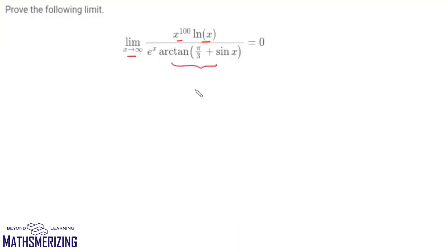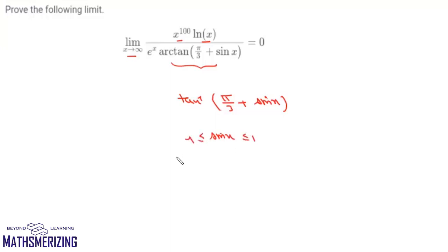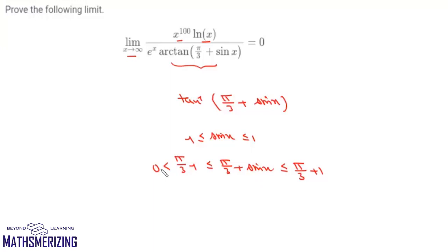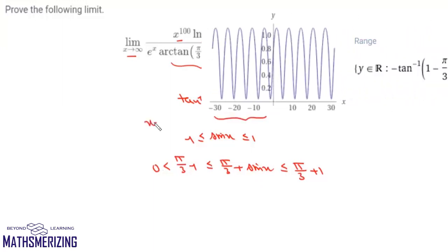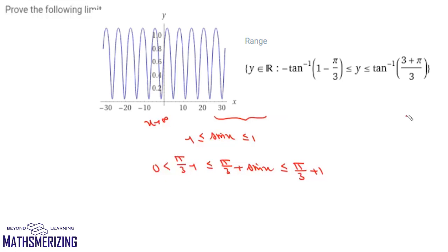First, we look at the term arctan(π/3 + sin x). We know that sin x lies between minus 1 and plus 1, so if we add π/3, we get π/3 minus 1 ≤ π/3 + sin x ≤ π/3 + 1. This value is greater than 0, and as x tends to infinity it is a non-zero oscillating value.